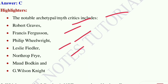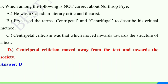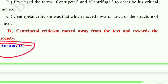Question number 5: which among the following is not correct about Northrop Frye? Option A: he was a Canadian literary critic and theorist. Option B: Frye used the terms centripetal and centrifugal to describe his critical theory. Option C: centripetal criticism was that which moved inwards towards the structure of the text. Option D: centripetal criticism moved away from the text and towards the society. Option D is the correct answer — centripetal criticism moved inward toward the structure, while centrifugal criticism moved away from the text toward society.